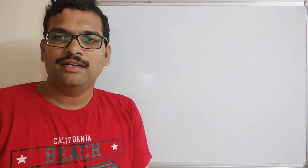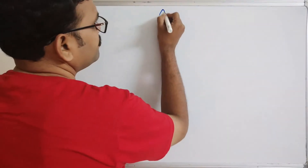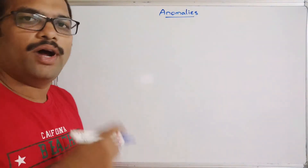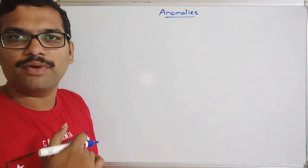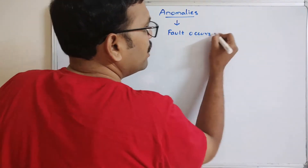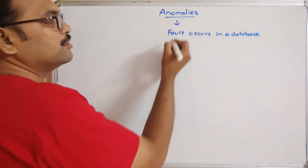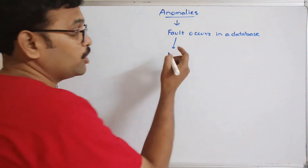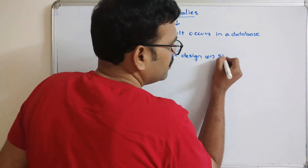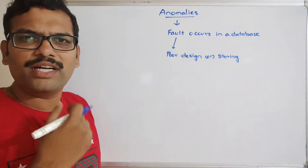Hello friends, welcome back to our channel. In today's session we'll discuss one more topic in DBMS — that is anomalies. An anomaly is a fault that occurs in a database because of poor design of the database or poor storage of data.